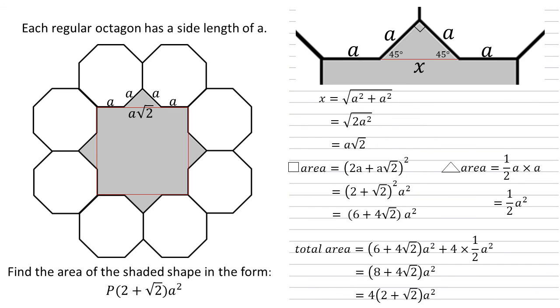If we then factorize out a 4, we get 4(2 + √2)a², which is in the form as required.